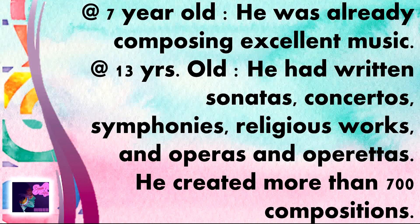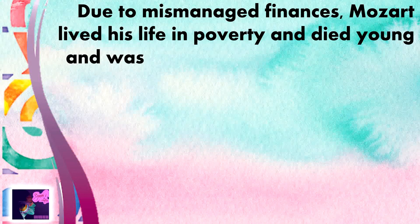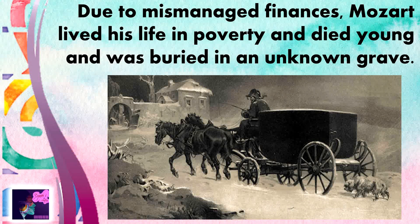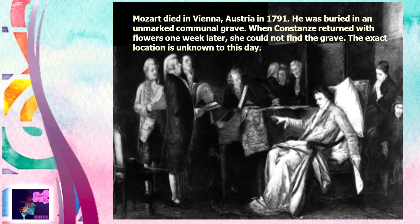There is one sad part about Mozart's life. Due to mismanaged finances, Mozart lived his life in poverty and died young, buried in an unknown grave. Due to poverty, he could not afford a decent and formal grave. Mozart died in Vienna, Austria in 1791 and was buried in an unmarked communal grave. When Constance returned with flowers one week later, she could not find the grave, and the exact location remains unknown to this day.